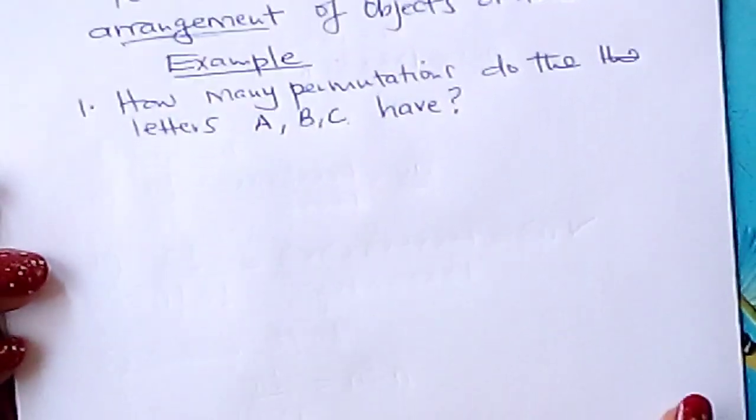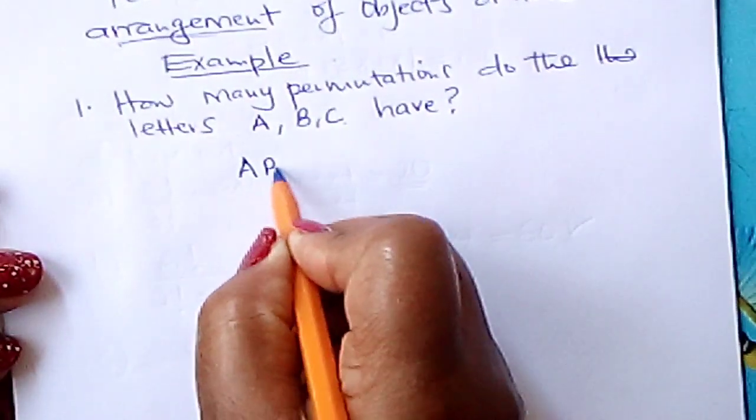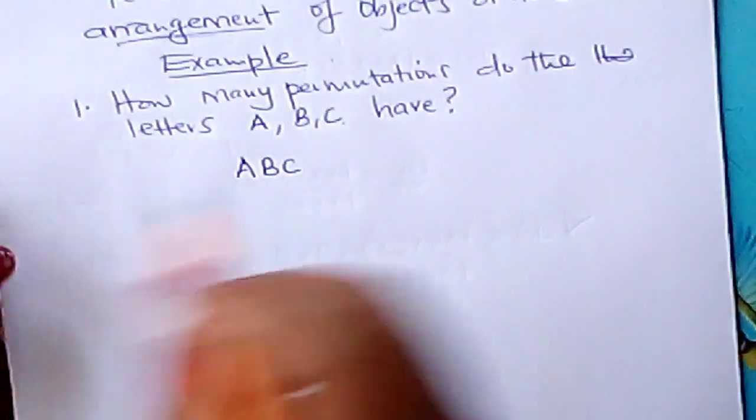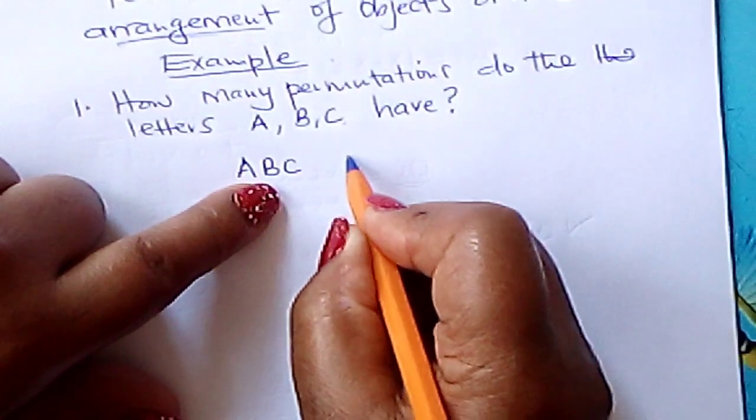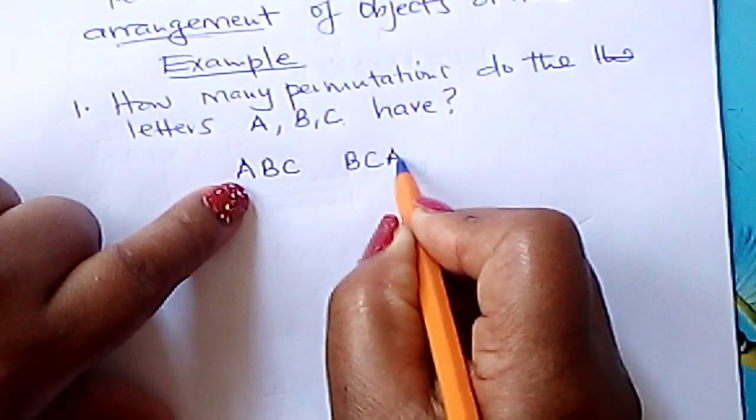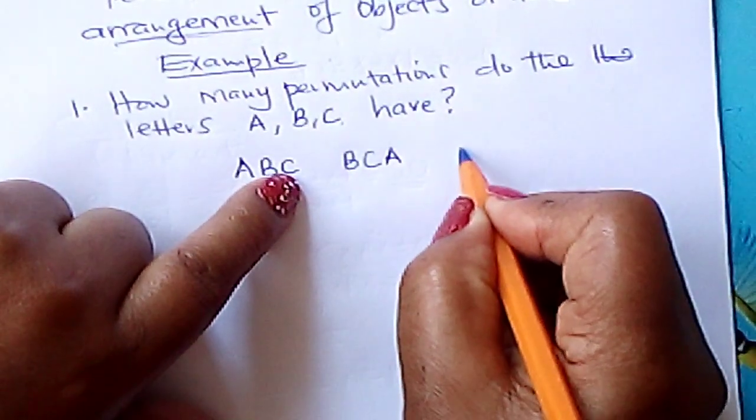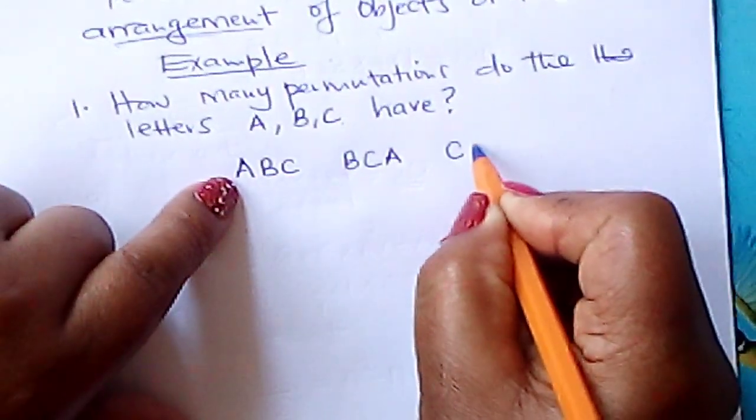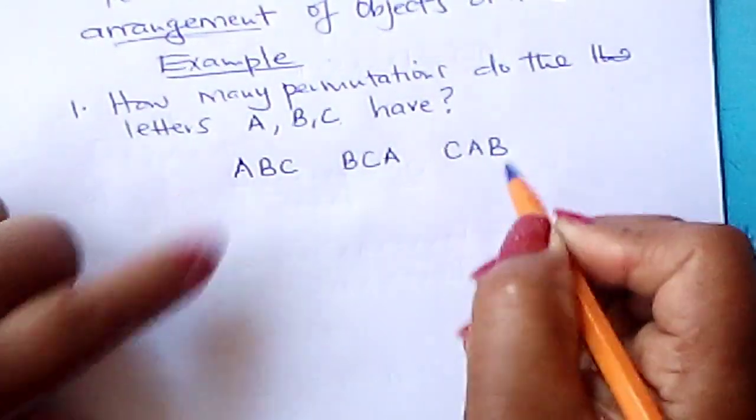So if I can do it literally here, I can talk of A, B, C, that is one arrangement. Then I can also talk of B, C, A. Then I can start with C, I talk of C, A, B. Those are three arrangements.